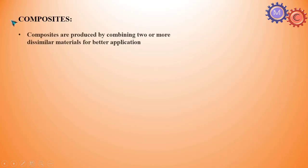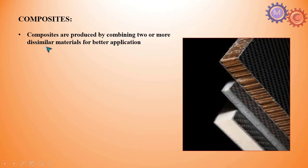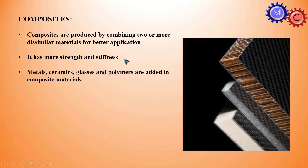Composites are produced by combining two or more dissimilar materials for better application. We take two different materials and combine them so that the strength and stiffness are increased. Metals, ceramics, glasses, and polymers are added as composite materials.